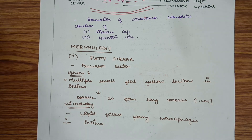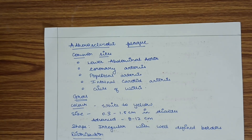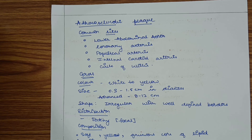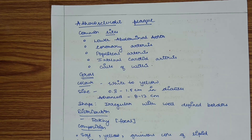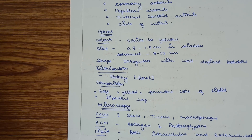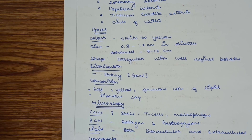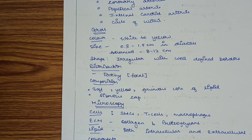The common sites of atherosclerotic plaques include the lower abdominal aorta (most common), coronary arteries, popliteal arteries, internal carotid arteries, and circle of Willis. In gross appearance, the plaques are white to yellow in color, 0.3 to 1.5 cm in diameter, and in advanced cases can reach 8 to 12 cm in diameter.